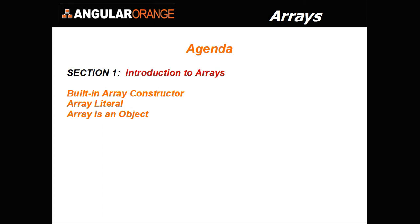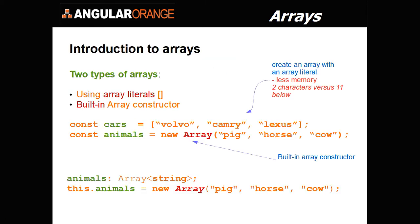So first, an introduction to arrays. There are two types of arrays: a built-in array constructor and an array literal. We'll discuss the differences between those two, and also look at the perspective that an array is an object and what that means.